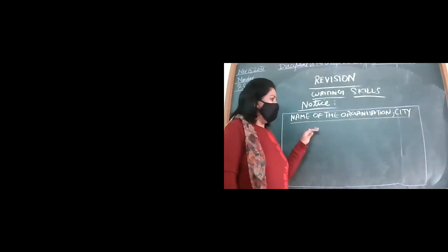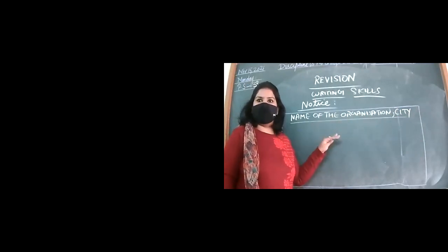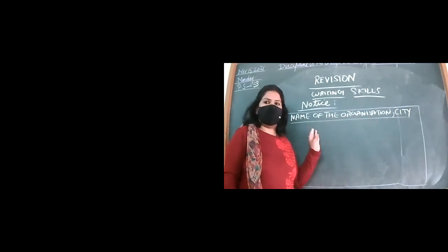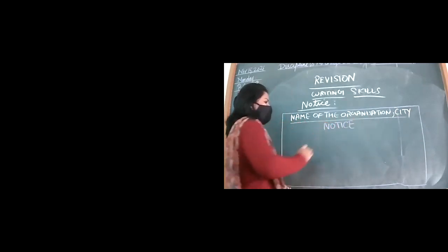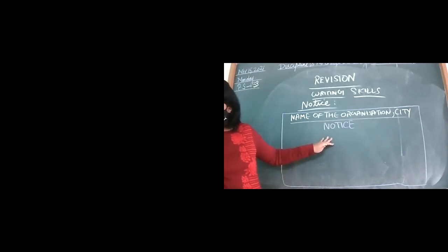The name of the organization or institution which is going to put up a notice, along with the name of the city also if it is mentioned. So this is the very first line of your notice. Then comes the word NOTICE itself in all capitals, preferably in the second line. Then in the third line we write date and title.